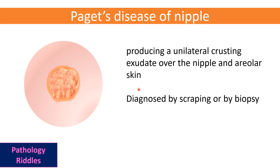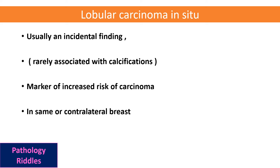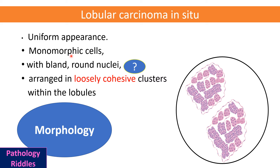Lobular carcinoma in situ is basically an incidental finding. DCIS can sometimes be diagnosed due to microcalcifications seen in mammography, but LCIS does not have microcalcification and is not easily detectable by mammography. It is a marker of increased risk of carcinoma in both the same and the contralateral breast. Morphologically, the cells of LCIS are uniform.